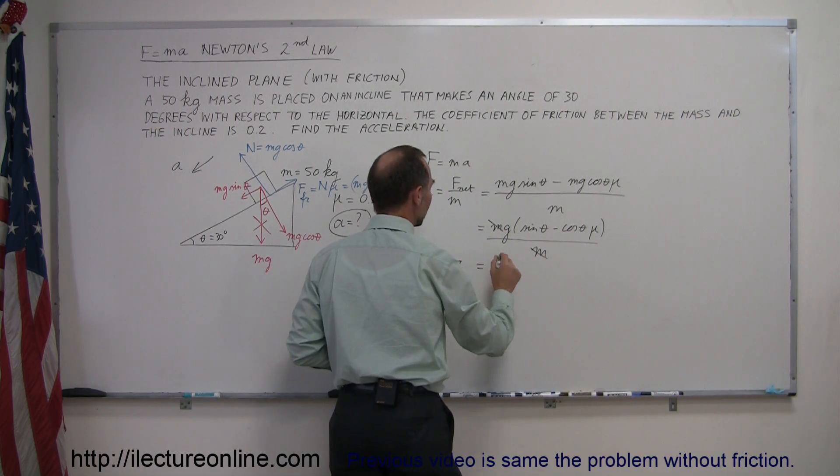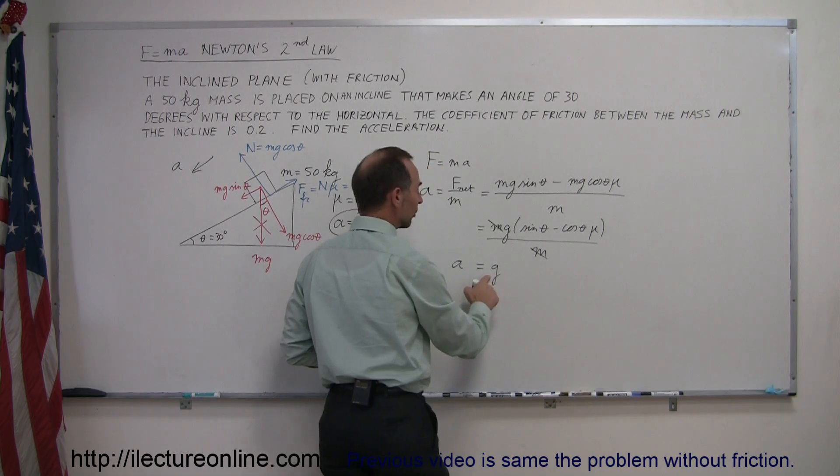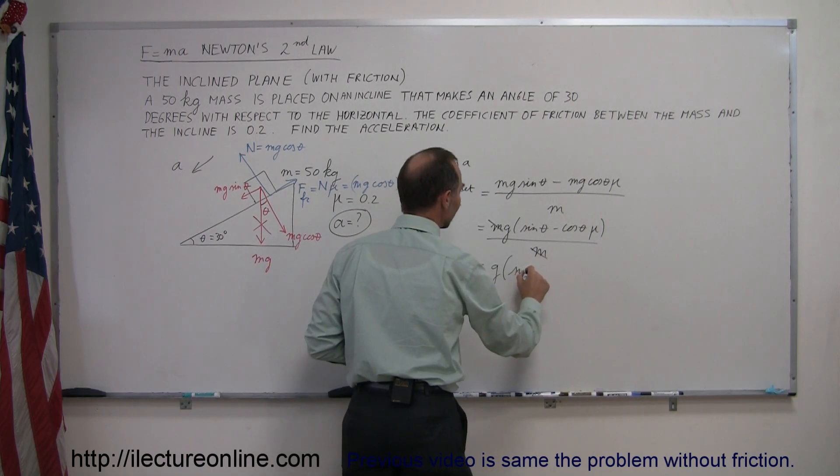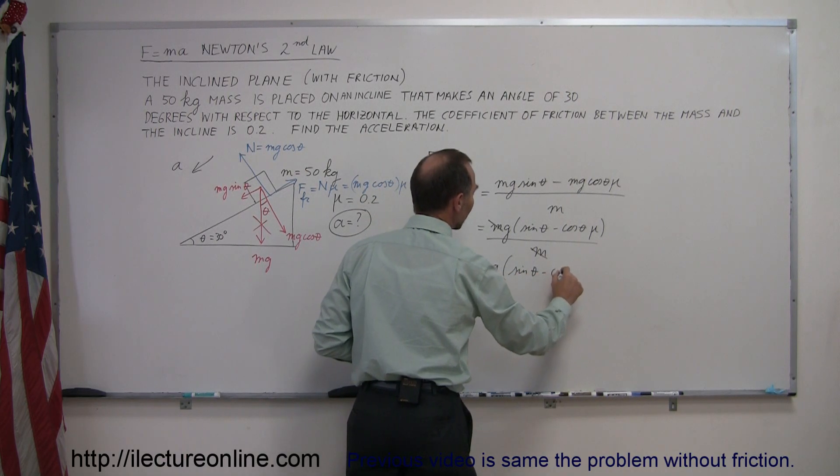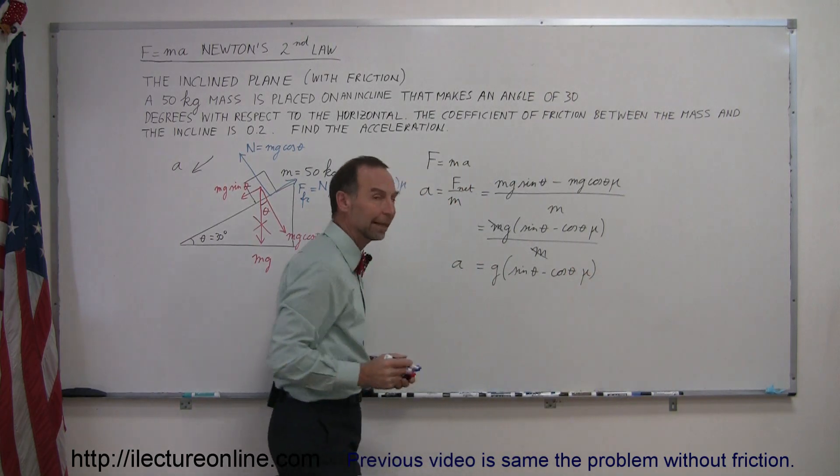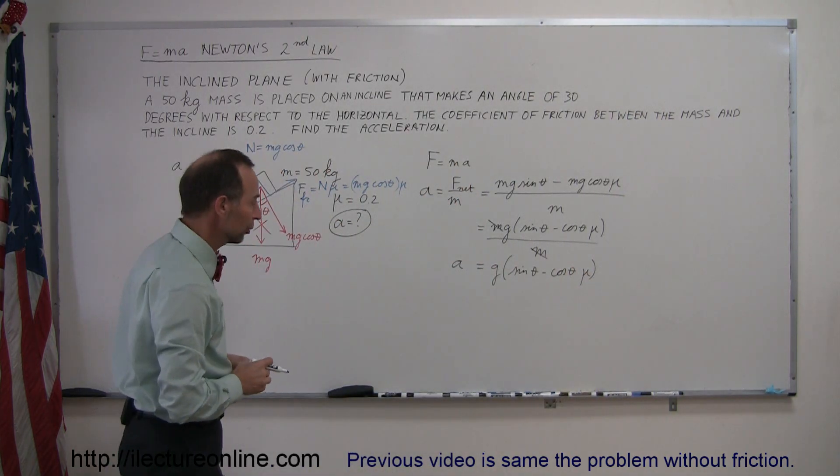and finally can say that the acceleration is equal to g, the acceleration due to gravity, times the sine of theta minus the cosine of theta times mu. And then I go ahead and plug in what these things are equal to.